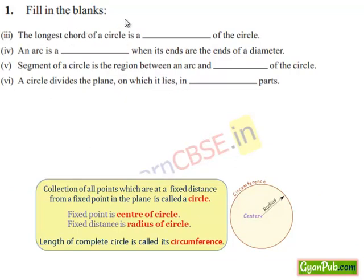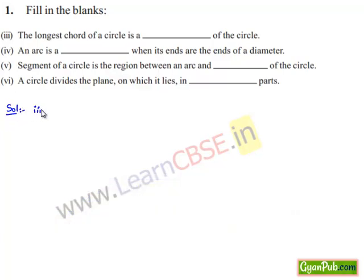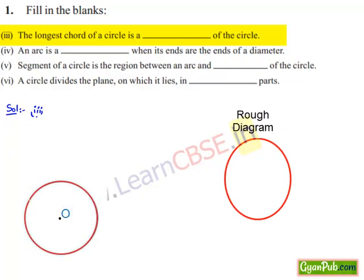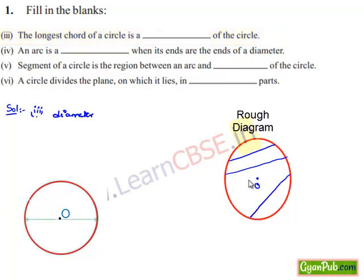Moving on to the third bit: the longest chord of the circle. Let us consider a circle with center O. We know that the longest chord of the circle is the diameter. If we draw any chord between two points on the circle other than the line passing through the center, it will have a length less than the diameter. Therefore, the diameter is the longest chord of the circle.